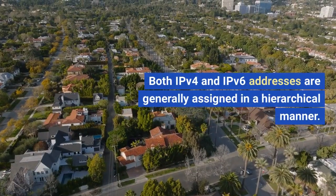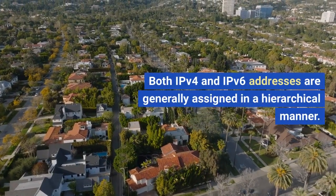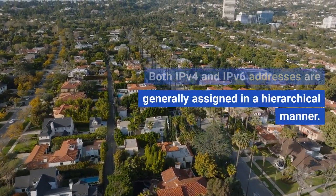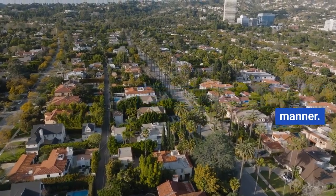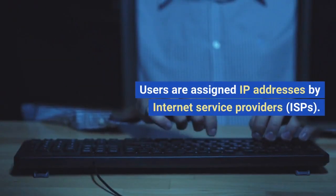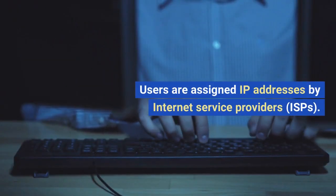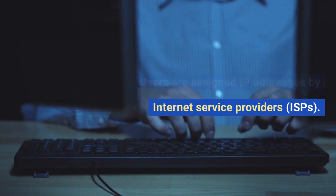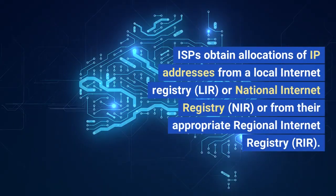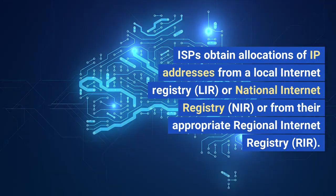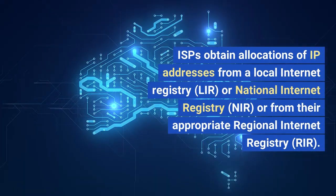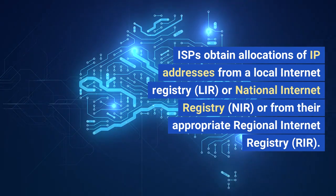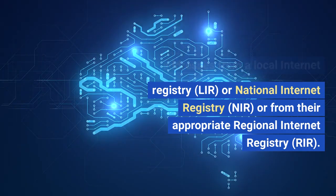Both IPv4 and IPv6 addresses are generally assigned in a hierarchical manner. Users are assigned IP addresses by internet service providers (ISPs). ISPs obtain allocations of IP addresses from a local internet registry (LIR), a national internet registry (NIR), or from their appropriate regional internet registry (RIR).